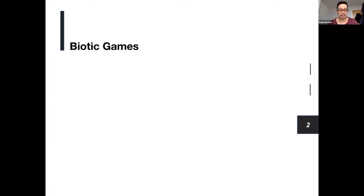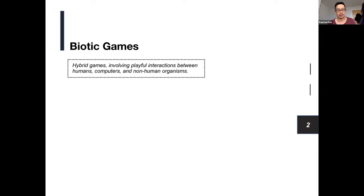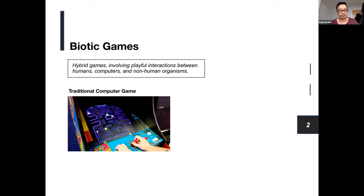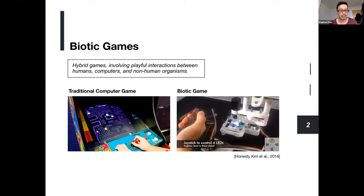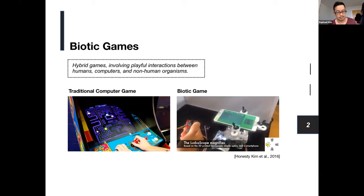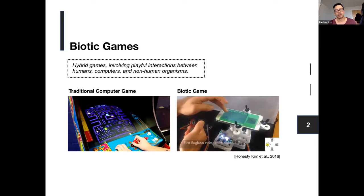First, the paper talks about biotic games. These are hybrid games involving playful interactions between three agents: humans, computers, and non-human organisms. So unlike traditional games, which only involve humans and computers, biotic games introduce a third non-human living entity, such as microbes, into the game. Their movements are captured and tracked by the smartphone and its software, allowing the player to visualize the gameplay on the screen.